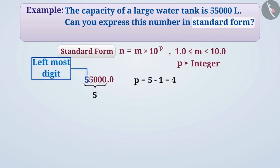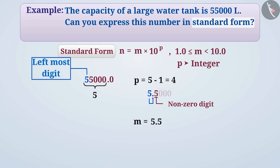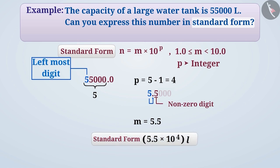Next, we will place the decimal point to the right of the leftmost digit of the number. Then, we will ignore all zeros placed after the decimal point. This will give us the value of m as 5.5. Using the values of m and p, we can write the standard form of the number as 5.5 × 10 to the power of 4.